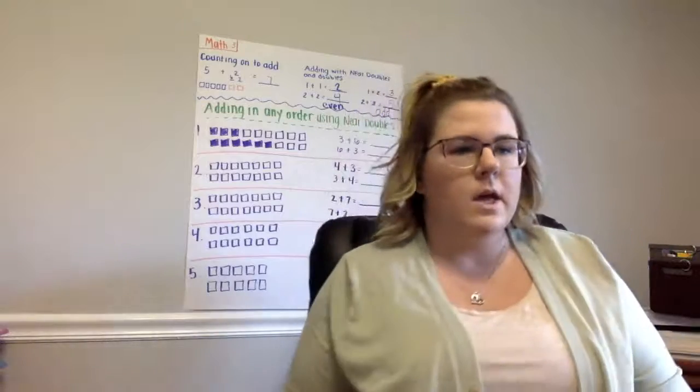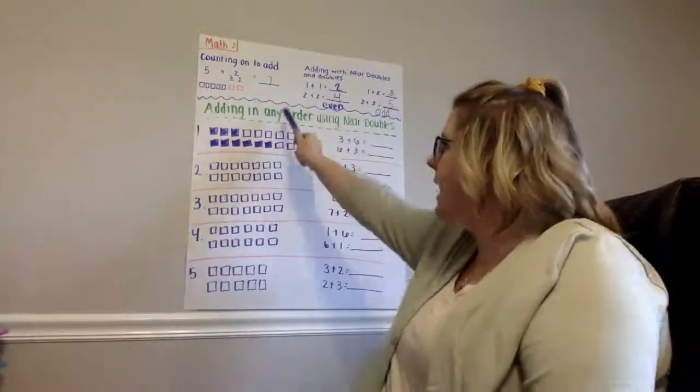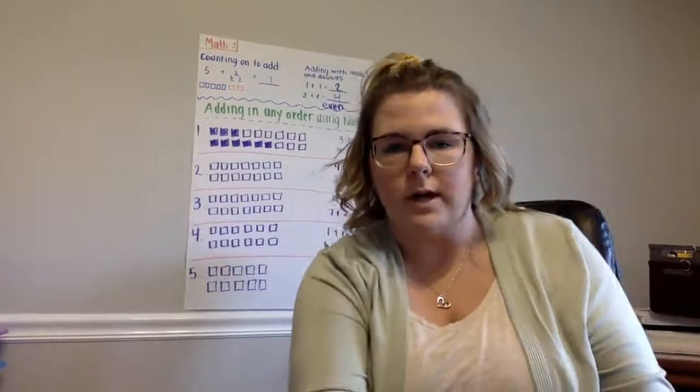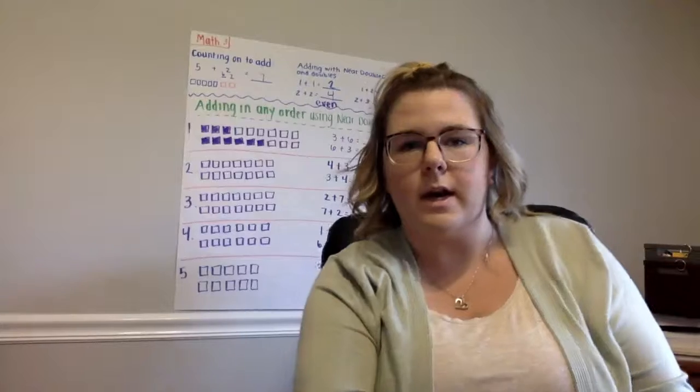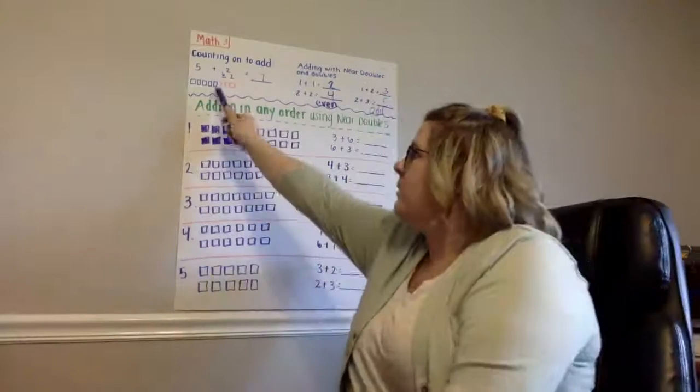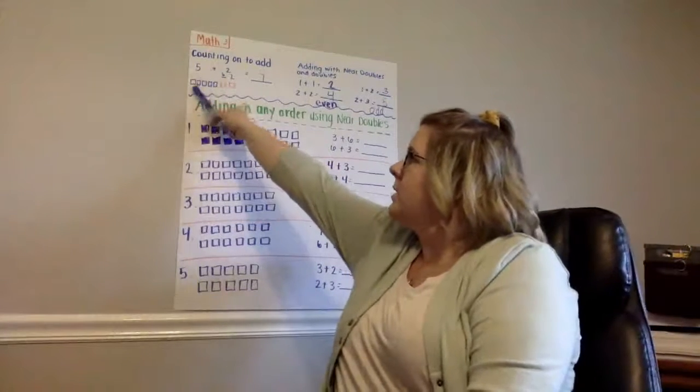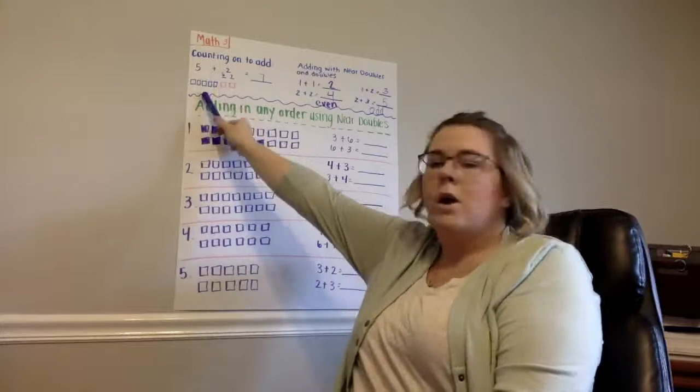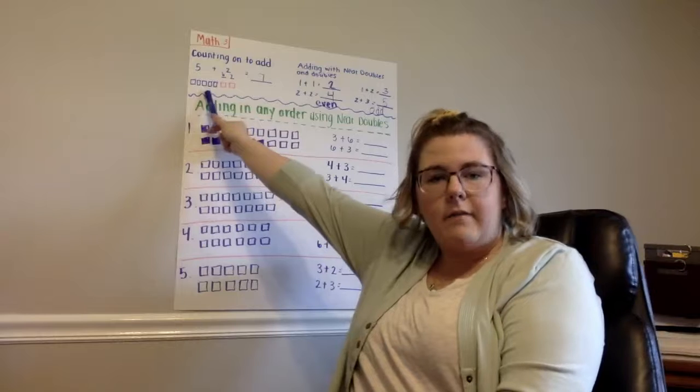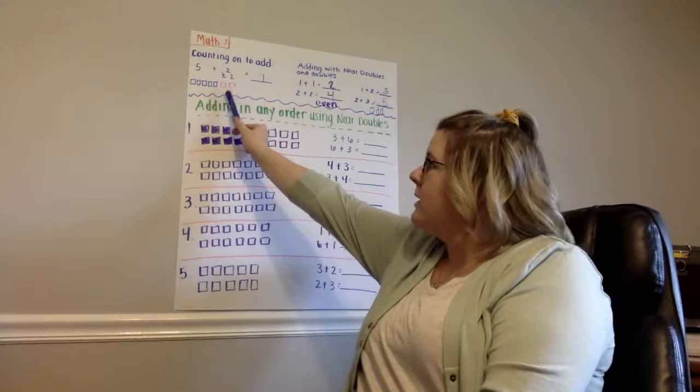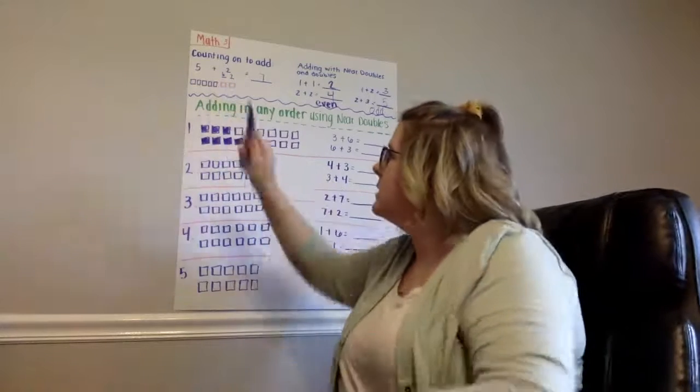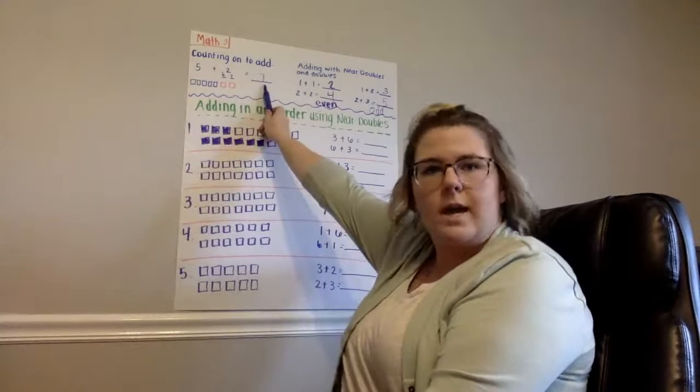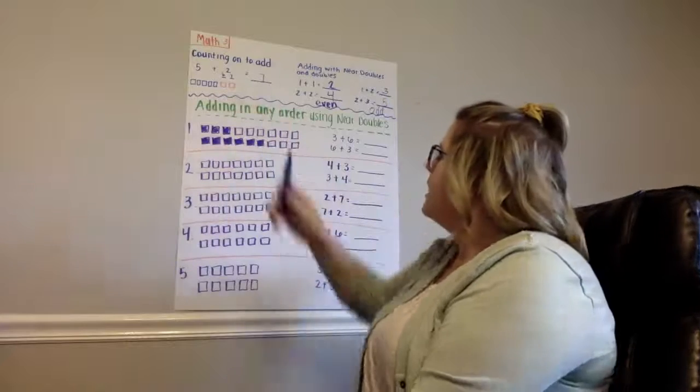Last week, we were talking about counting on to add. Remember, we do not start at zero, we start at the number that is in the equation and then we count on. So as I know, I have 5 plus 2 right here is 5 blocks and then I am going to add on 2. So 6, then 7. So I know that 5 plus 2 is 7.